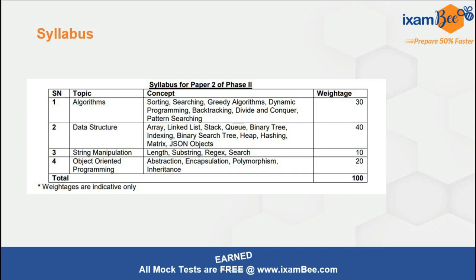Now see the weightage given to every topic. For Algorithm it is 30, for Data Structure it is 40, for String Manipulation it is just 10, and for Object-Oriented Programming concepts - the OOP pillars which are abstraction, encapsulation, polymorphism, inheritance - it's 20. Cumulatively the total is 100. Now there is a star mark: weightages are indicative only. It means you won't get exactly 30 for algorithm or 40 for data structure, but near about this - you can get 39 or 29 or 35 for algorithm. A plus-minus 5 or 6 variation is expected.